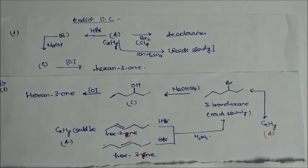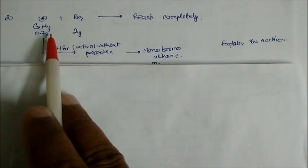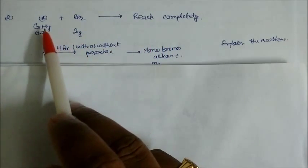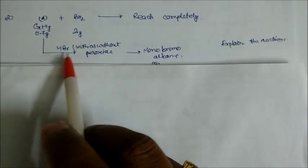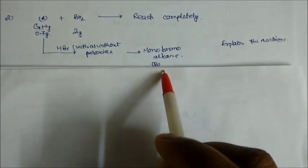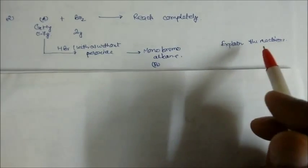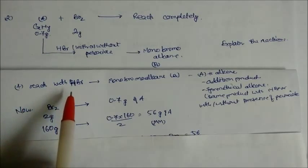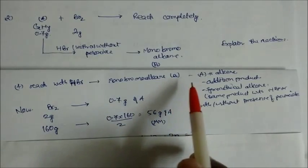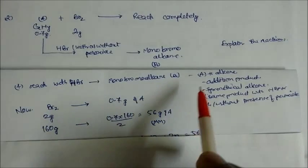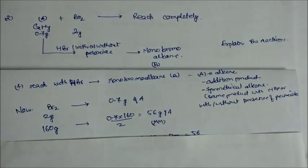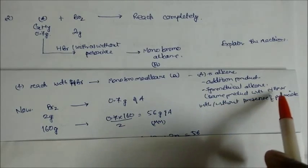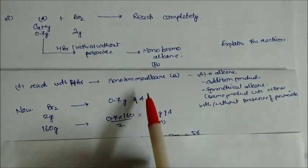So hydrocarbon A (CₓHᵧ) reacts with bromine completely — the reaction is complete, taking 2 grams of bromine, and A itself is 0.7 grams. In presence of HBr with or without peroxide it gives a monobromo alkane, which is compound B. From this we conclude that A must be an alkene undergoing addition reaction. Also, A is a symmetrical alkene because HBr with or without peroxide gives the same product.